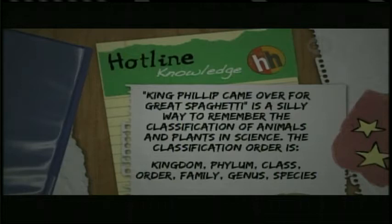King Philip came over for great spaghetti is a silly way to remember the classification of animals and plants in science. The classification order is kingdom, phylum, class, order, family, genus, species.